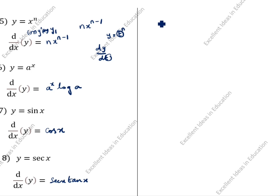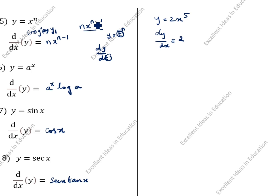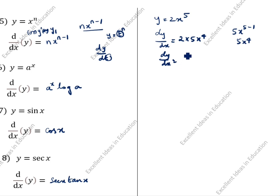Now we will do some examples. y = 2x^5. What is the differentiation of 2x^5? 2 is a constant term, so keep it as is. For x^5, use the formula n·x^(n-1): n is 5, so 5·x^(5-1) = 5x^4. Multiply by 2: dy/dx = 10x^4. This is the answer.